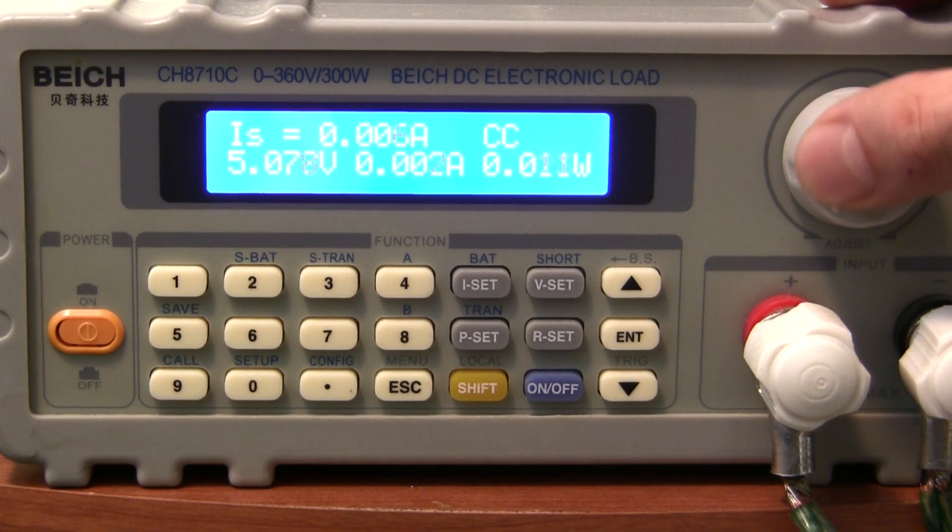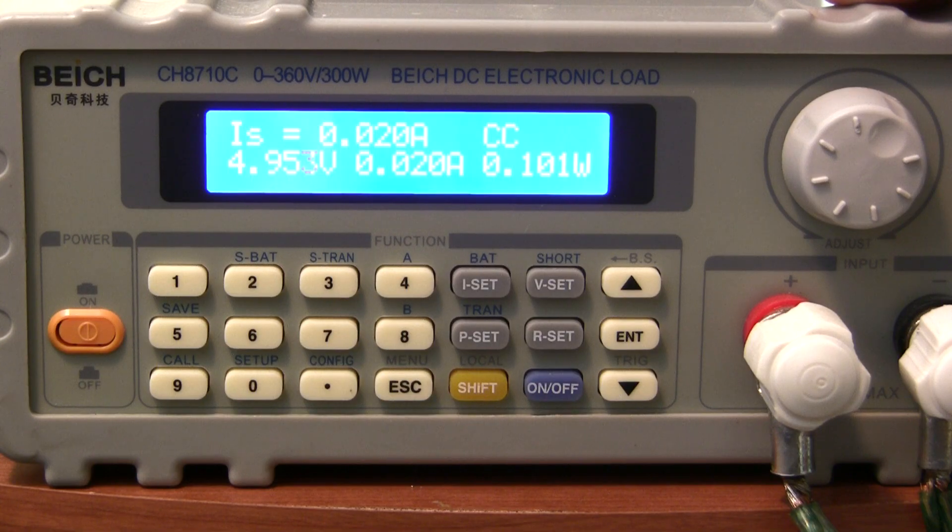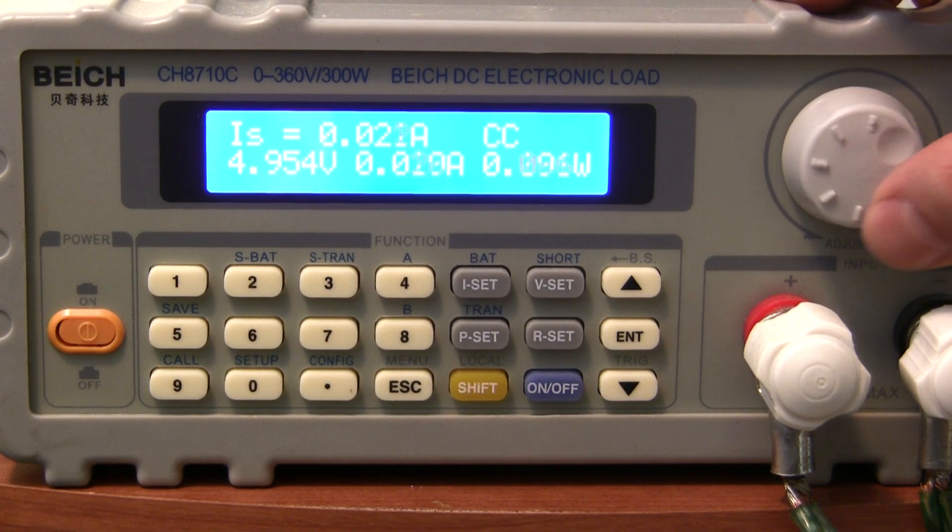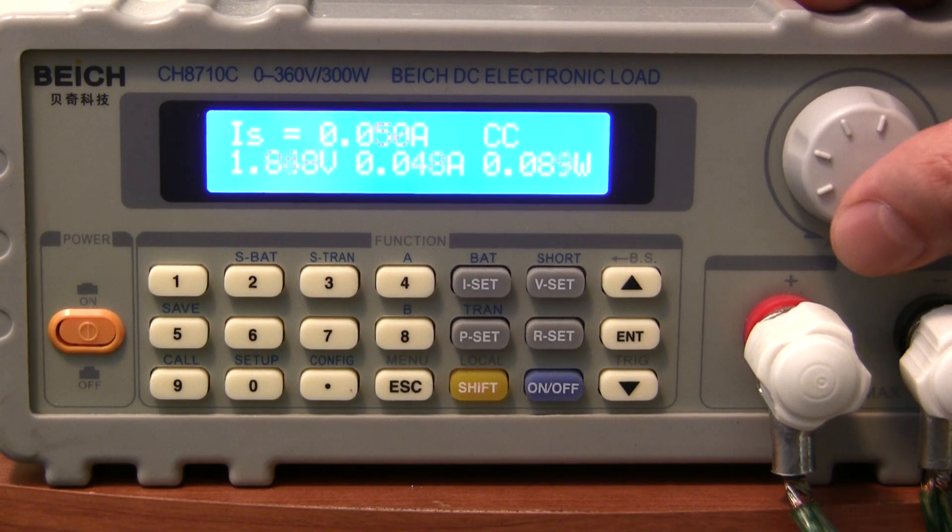If I increase the load to 20 milliamps, the output drops to 4.954 volts. That's pretty good, and it would be enough to power a microcontroller or some digital logic chips. But if we put a 30 milliamp load on it, all of a sudden we've got a significant voltage drop. And with a 50 milliamp load, it's completely useless.